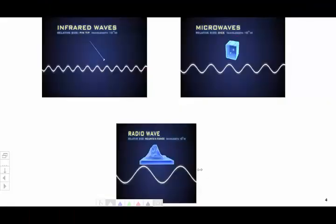Now here are a couple of different electromagnetic radiations and their different wavelengths. The infrared radiation has wavelengths in the range of 10 to the power minus 5 meters, which is relatively the same size as a pen tip.